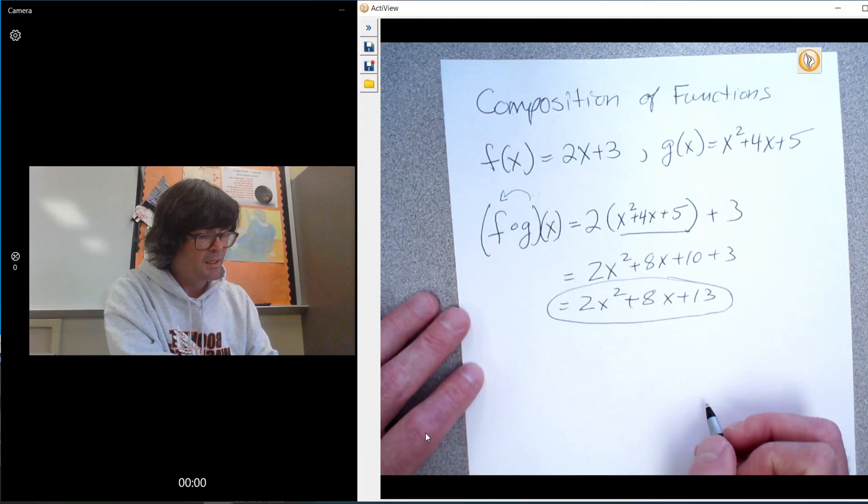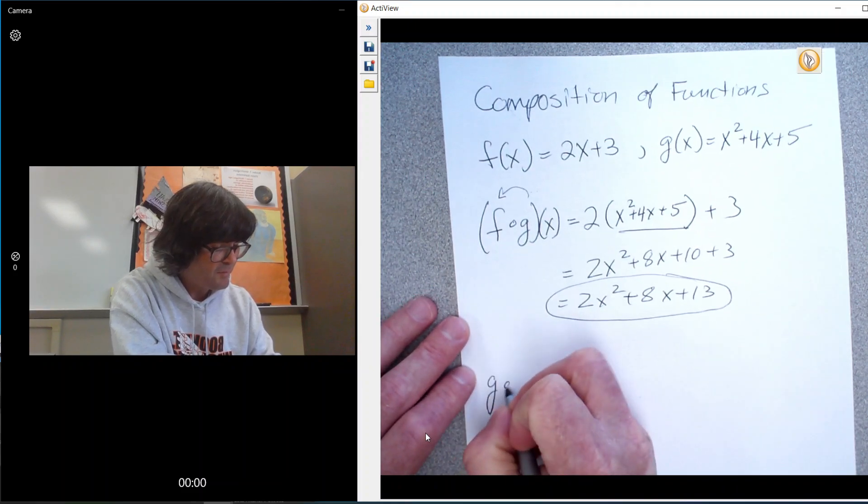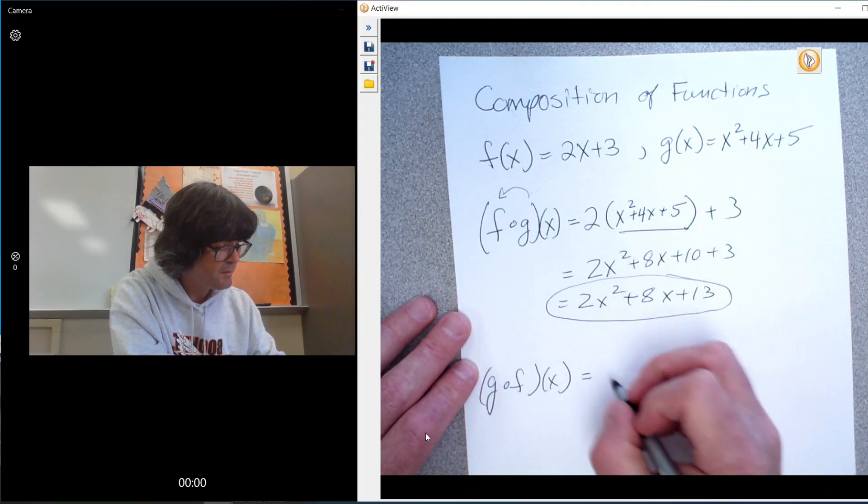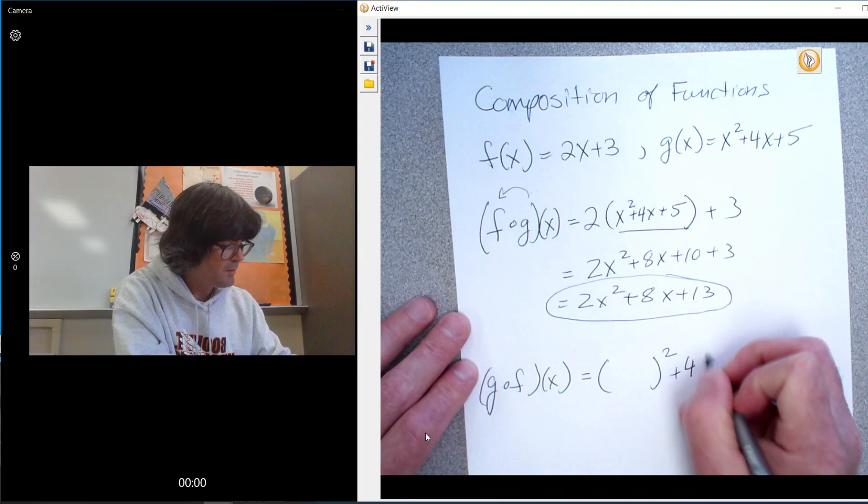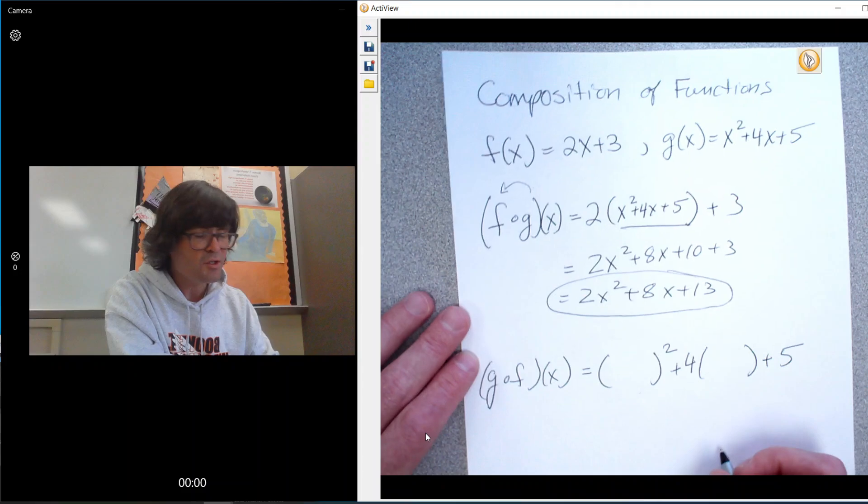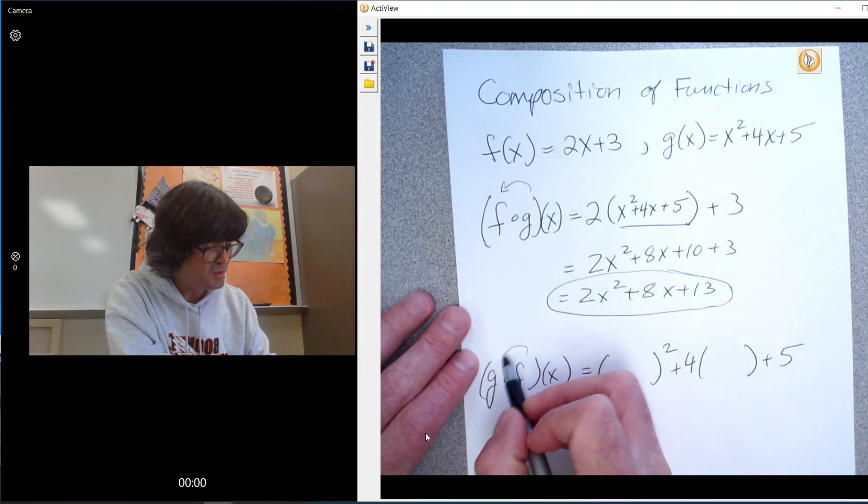If you do g composed of f, that is the opposite where you take function g, which is x squared plus 4 times x plus 5. Then you just put in f. f goes into g.